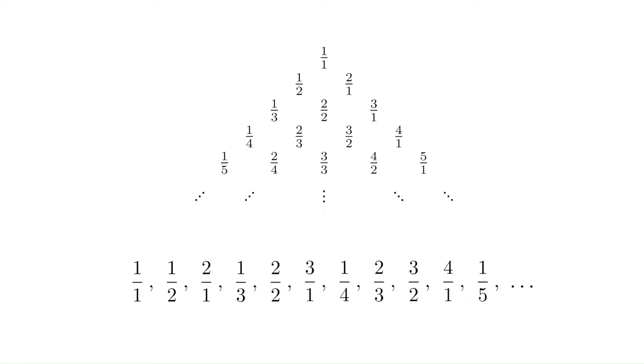However, there are repeats. For example, 2 over 2 already appears reduced as 1 over 1. We could just remove it from the list, along with all other fractions that aren't reduced.